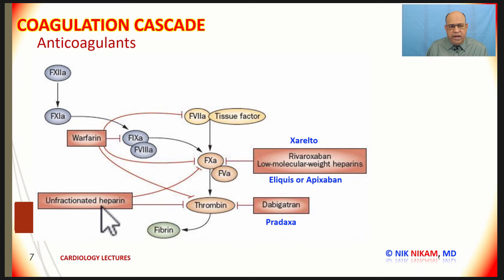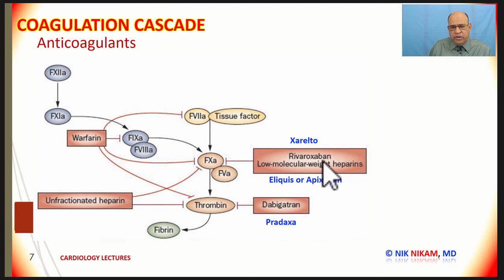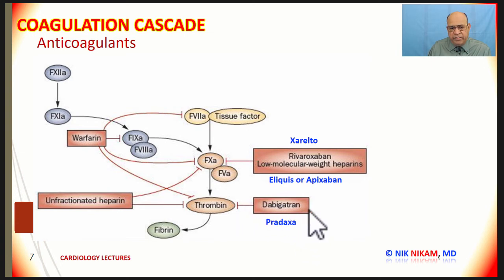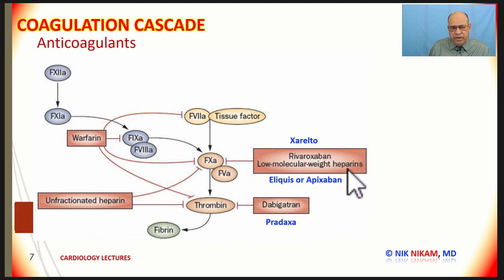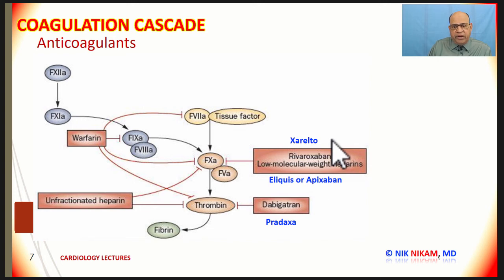Unfractionated heparin acts on thrombin and factor 10a. The newer anticoagulants particularly used in patients with atrial fibrillation — Xarelto or rivaroxaban, and Eliquis or apixaban — work primarily on factor 10a. Whereas dabigatran or Pradaxa acts as an anti-thrombin agent. These are the mechanisms of action of various anticoagulants used acutely with heparin or low molecular weight heparin, or long-term with warfarin, or in patients with atrial fibrillation and deep venous thrombosis with rivaroxaban, apixaban, and dabigatran.